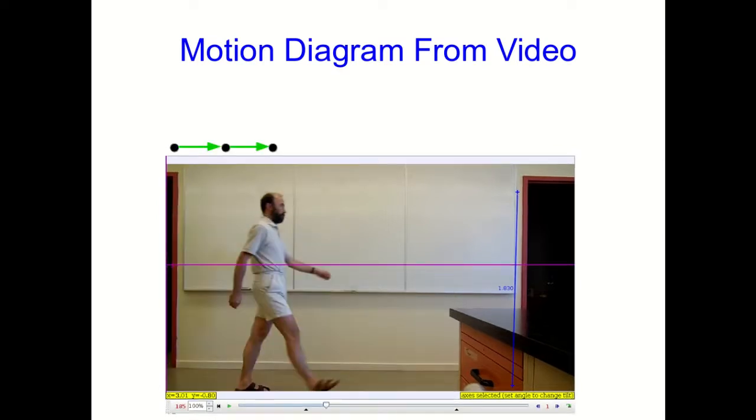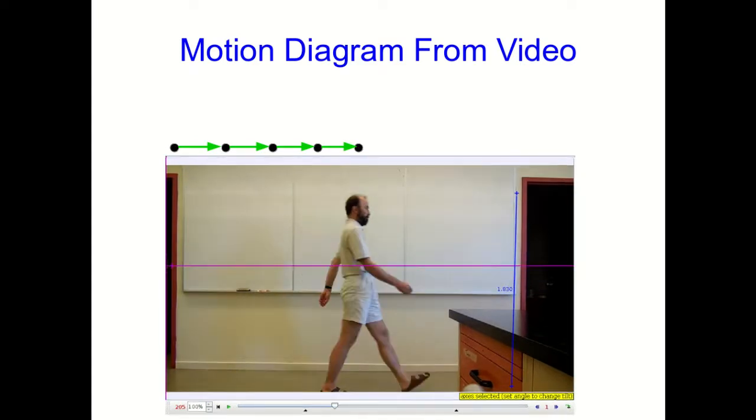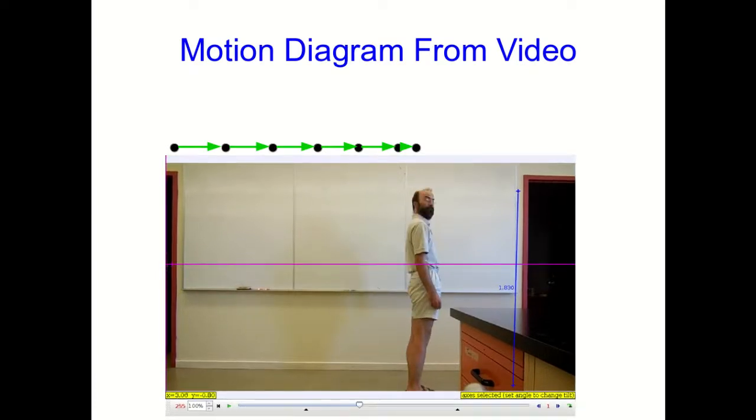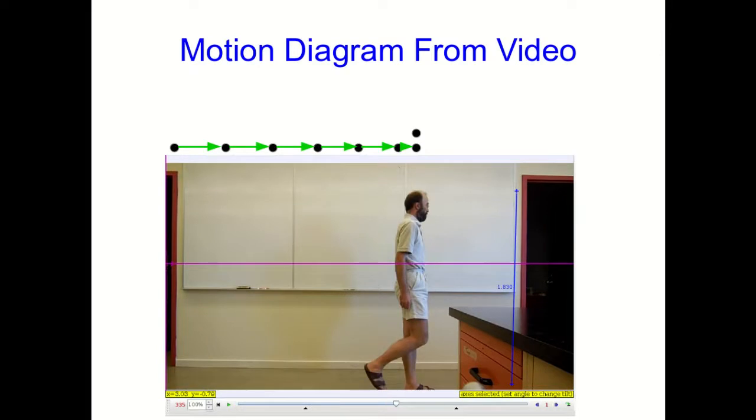You see, I go across the room at roughly constant speed. I slow down a little bit. And then at the very end, of course, I slow down to stop. And then I stay there, uninterestingly, for a few frames, which we'll mostly skip.